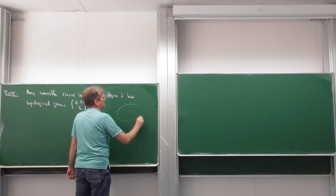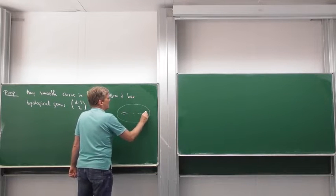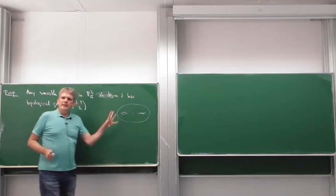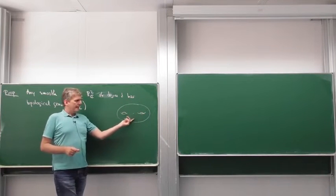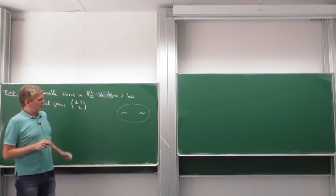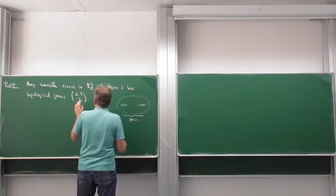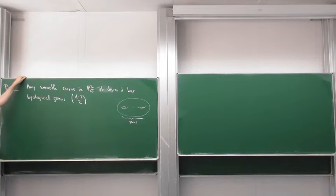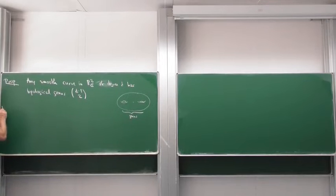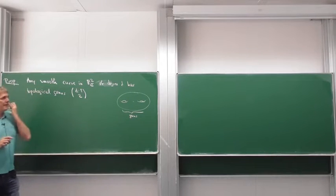If we draw this as a topological space, it looks like a real surface with a certain number of holes — a compact orientable surface over the real numbers. It always looks like a donut with more than one hole, and the number of holes is called the genus. For the proof, the idea is to project such a curve to a projective line.